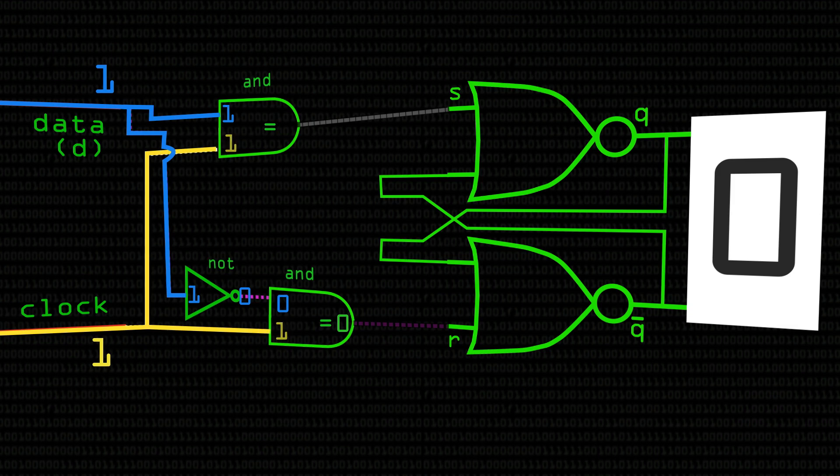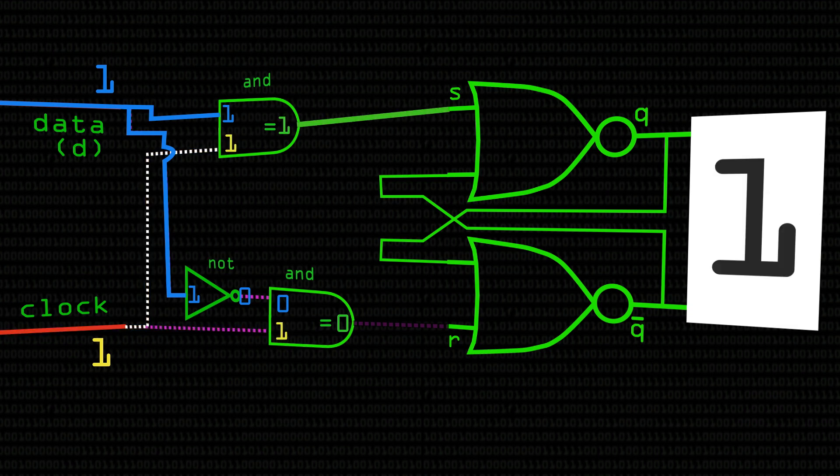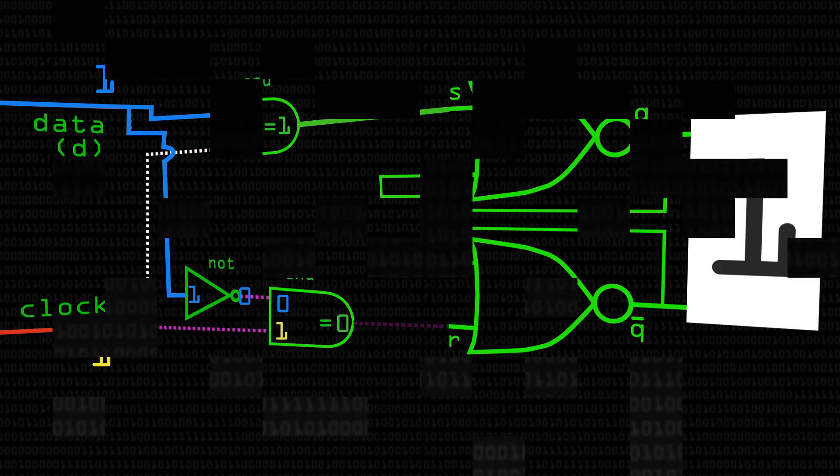Previously, we looked at how we could build a simple memory circuit from NOR gates. Today, we're going to look at how we can take this further and see how computer memory is built in a bit more detail.